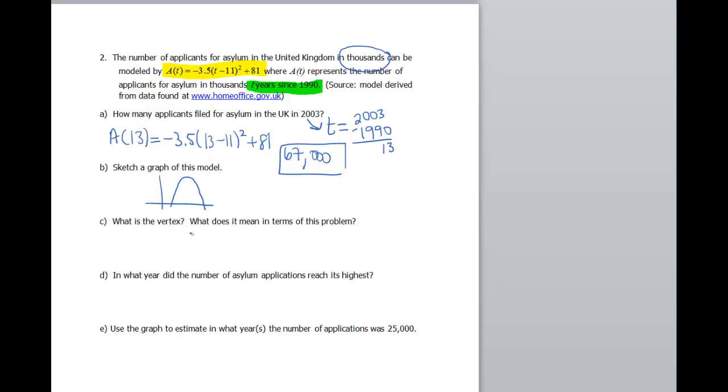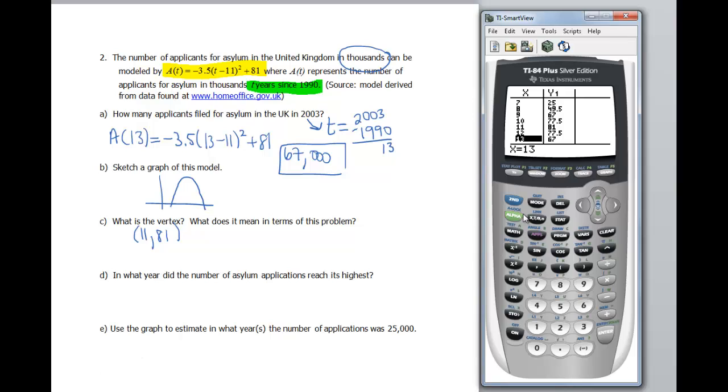All right, what is the vertex? Well, I already gave that away earlier. I said the vertex was at 11, 81, because those are my values for h and k. And if you don't buy that, you can always go to the calculator. Look at the graph. You can eyeball 11, 81, or you can do that second calc, and go through the steps of finding the maximum again. But I know from the formula that that is going to be my vertex.